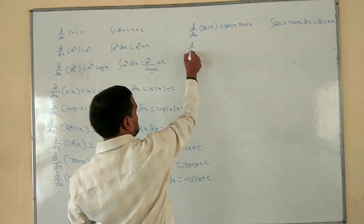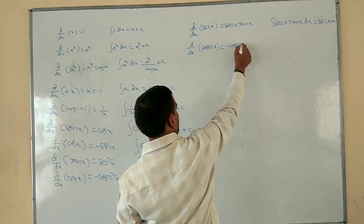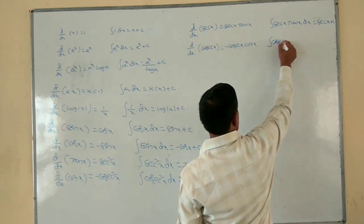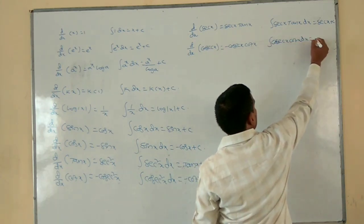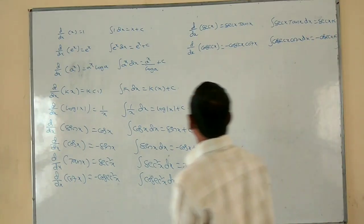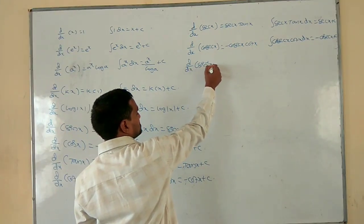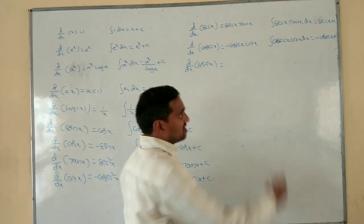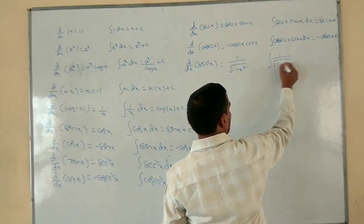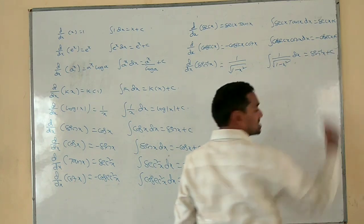dy/dx of cosecant x is minus cosecant x into cot x. Integration of cosecant x cot x dx is minus cosecant x plus c. dy/dx of sin inverse x: differentiation of sin inverse x is 1 by root of 1 minus x square. Integration of 1 by root of 1 minus x square dx is equal to sin inverse x plus c.